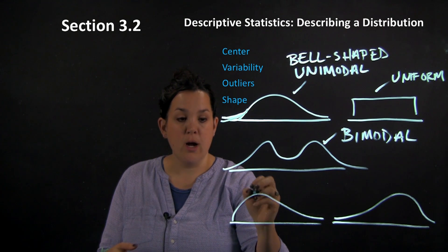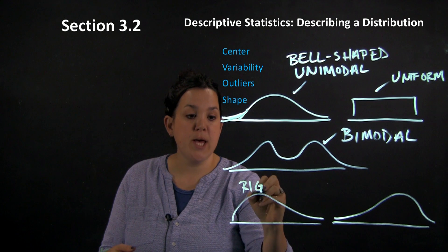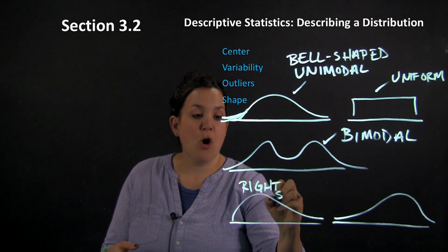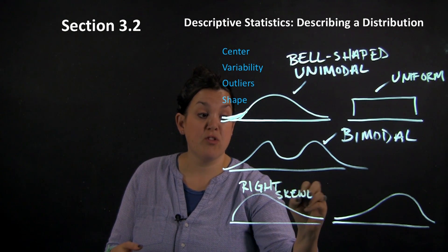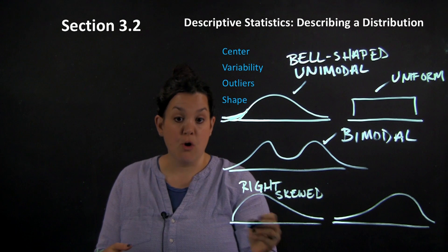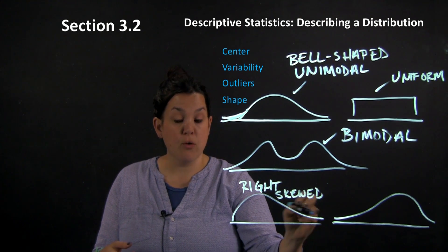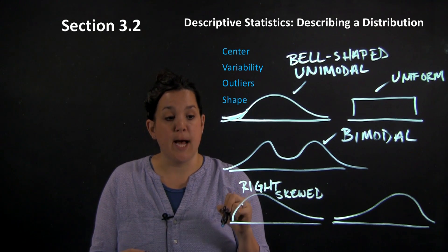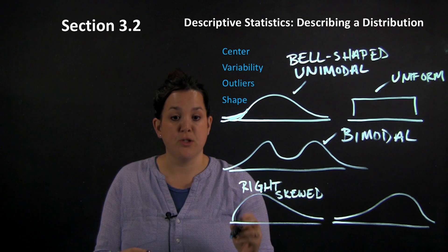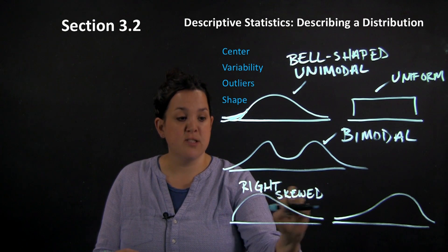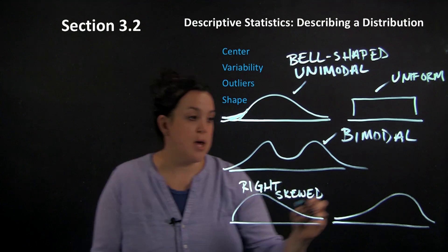Right here, this would be called right skewed. And it's called right skewed because that's where the skewness is happening. So the skewness or drag of the graph is happening on the right hand side. So I would describe that as being right skewed. The bulk of the data is on the left and the skewness is happening on the right.